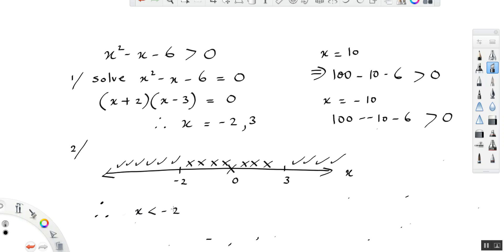x is less than minus 2, so everything to the left of minus 2, or everything to the right of 3, so x is greater than 3. That gives us two regions in which x squared minus x minus 6 is greater than 0.